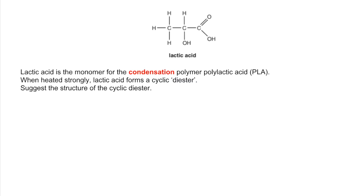When it's heated strongly, lactic acid forms a cyclic diester. So that's just a ring structure with two ester groups in it. And then we've got to suggest the structure of the cyclic diester.